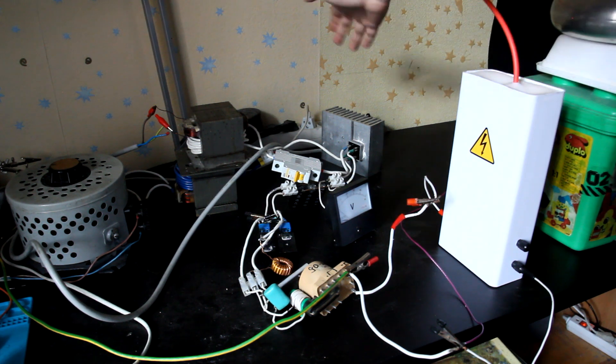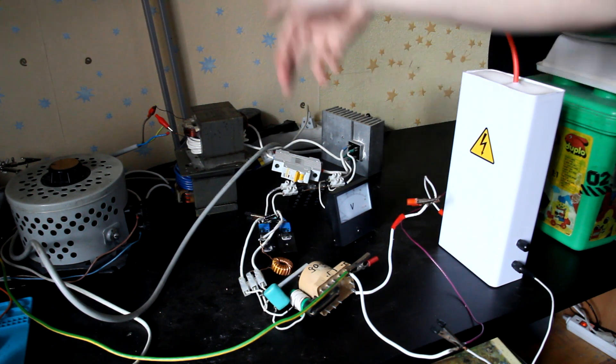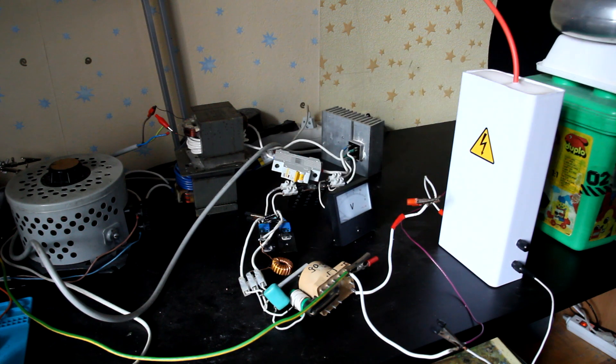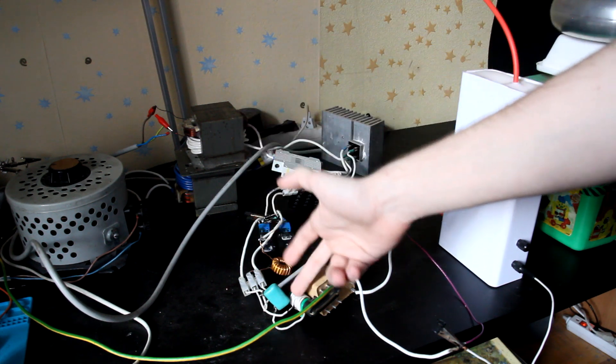Then it goes to a full bridge rectifier, then to a capacitor bank to filter the voltage, then it goes to a ZVS driver. The ZVS driver basically converts DC into high frequency AC.